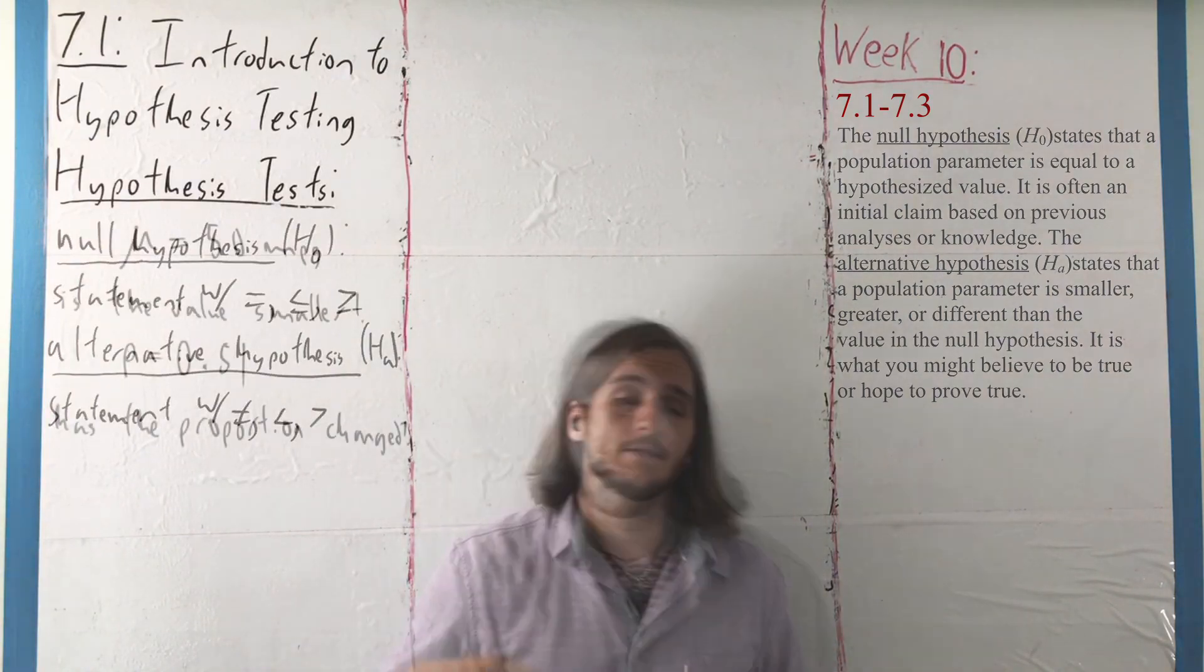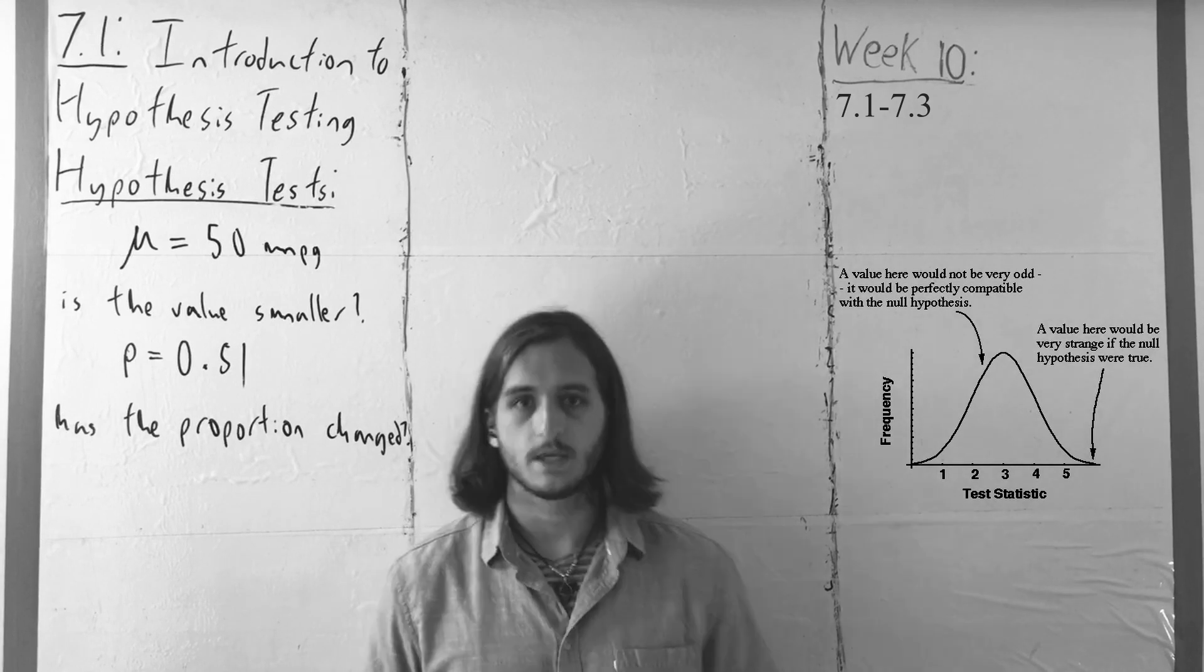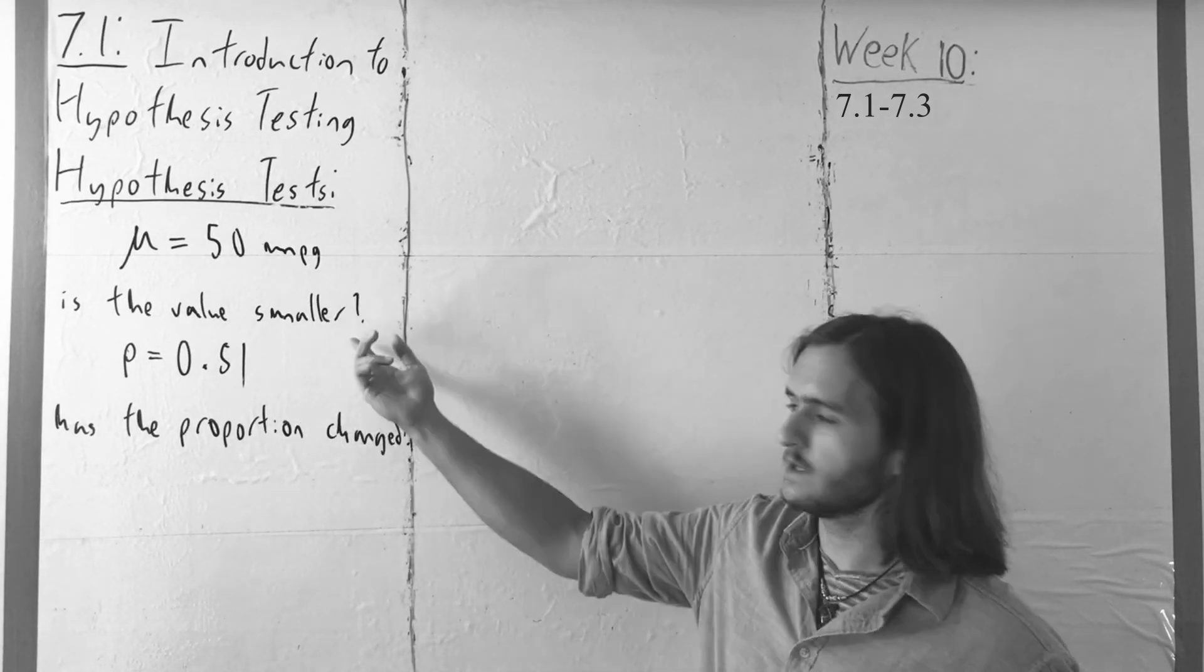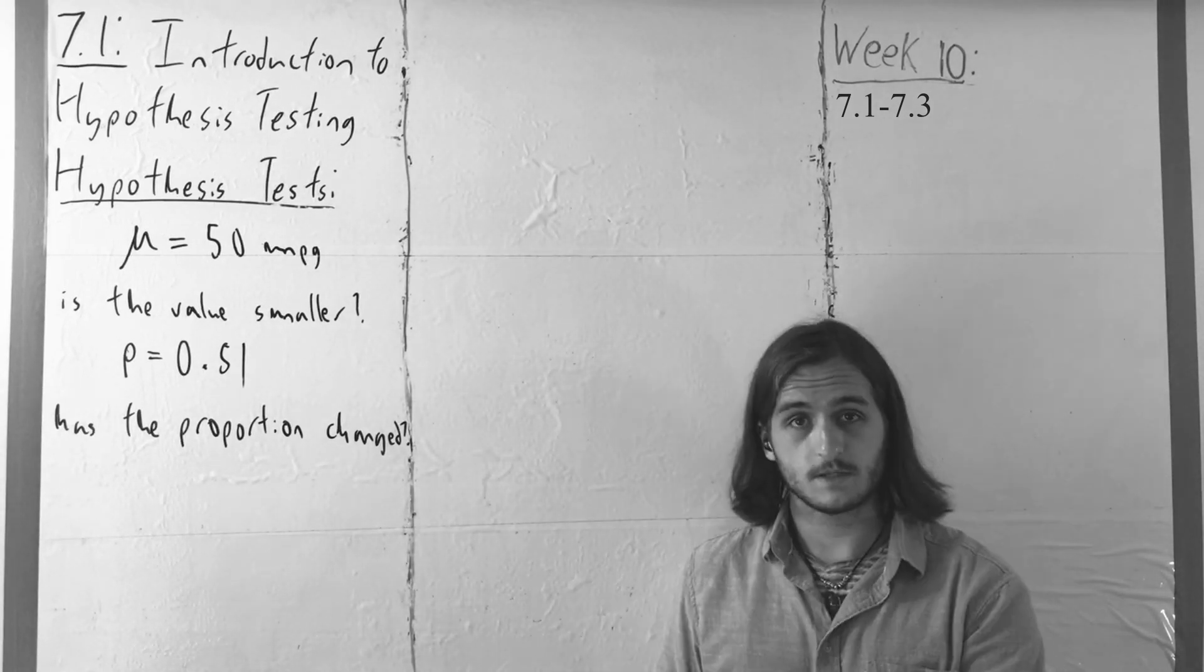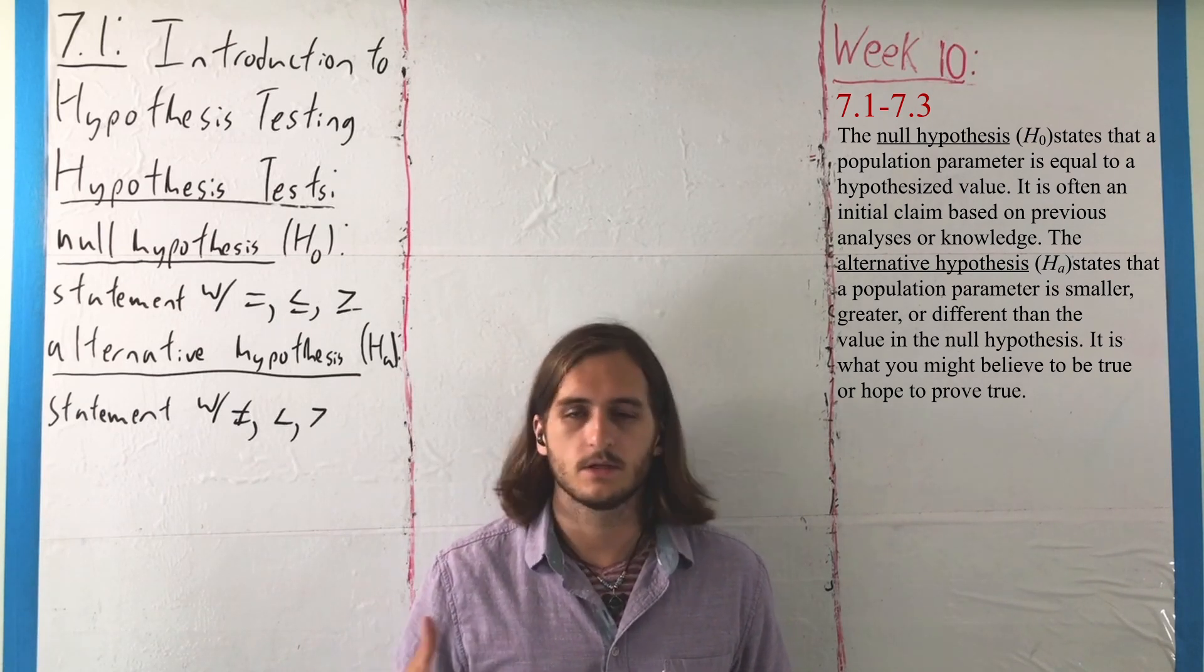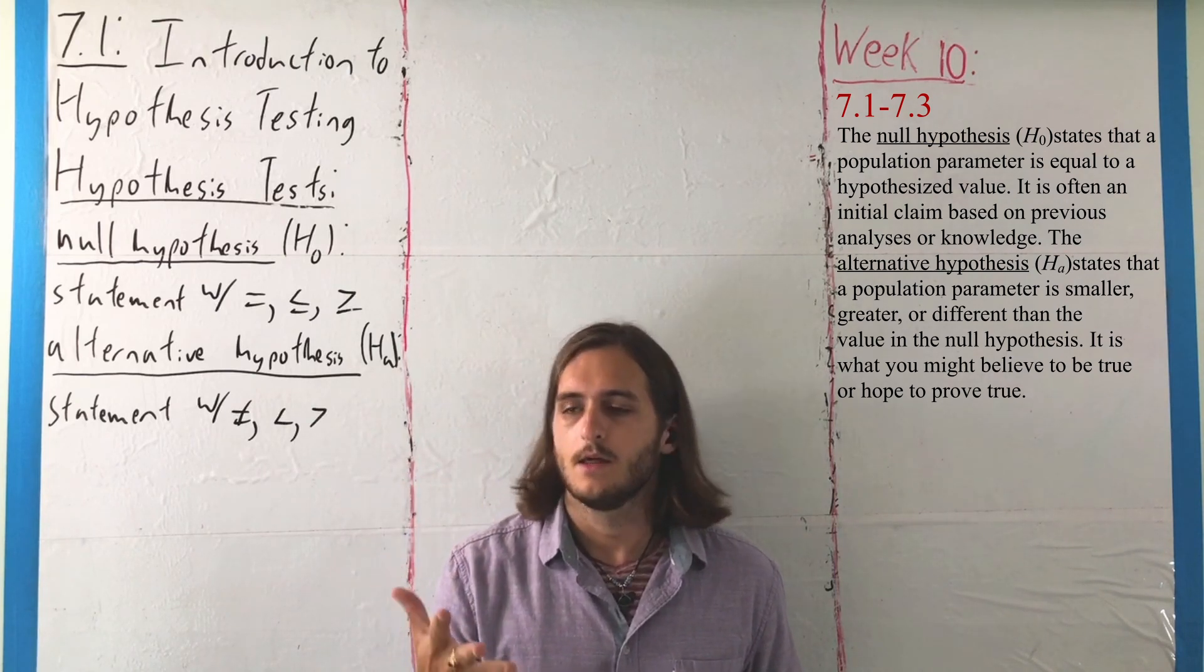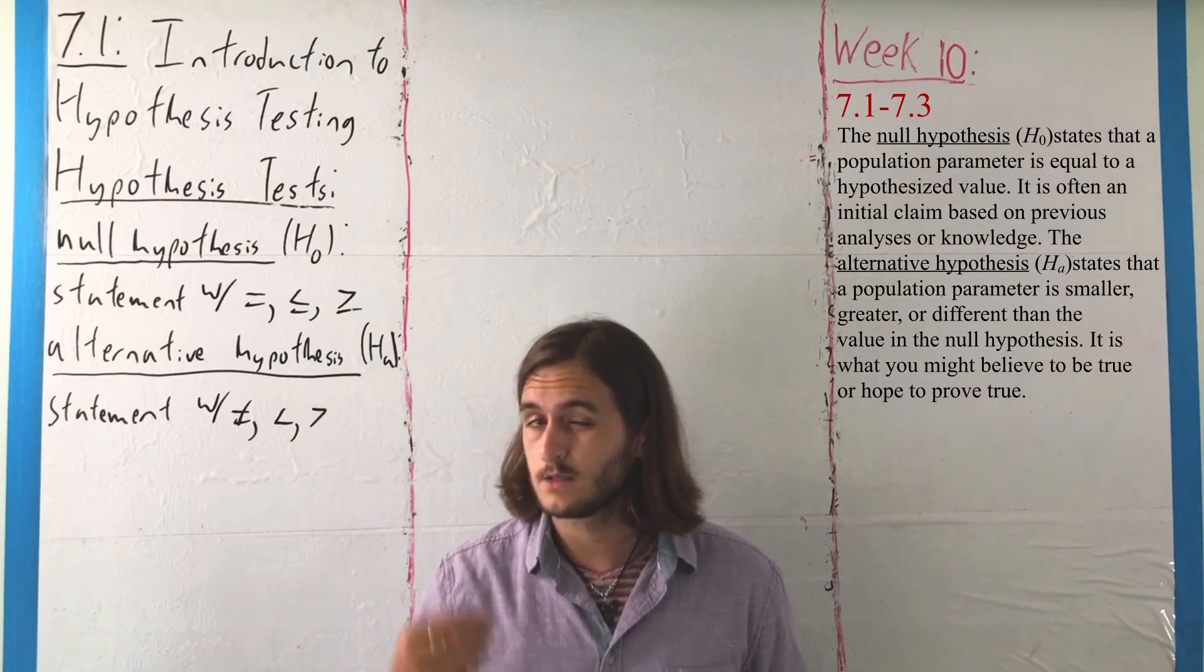In our last cases, that would be something like the idea that the proportion was exactly 51% or the average was exactly 50 miles to the gallon. This is usually what we are claiming, what we are expecting, to an extent that the information we have, the information we're building from, is, or at least was, reasonable.